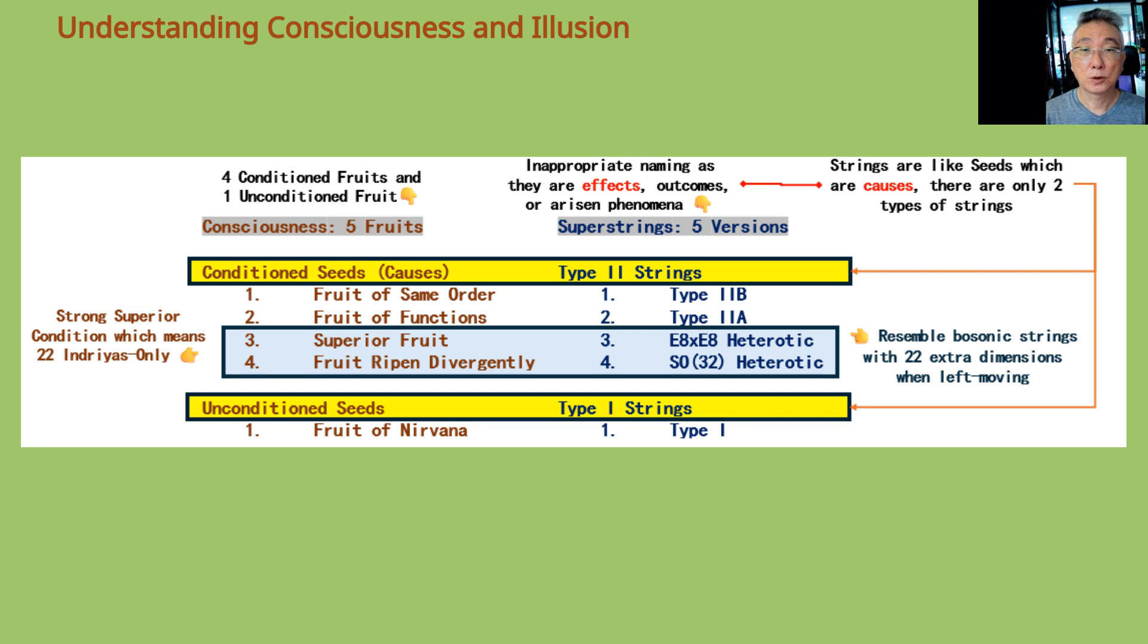In Yogacara Buddhism, there are four conditioned fruits with one unconditioned fruit. That is why there are four type 2 superstrings and one type 1 superstring.